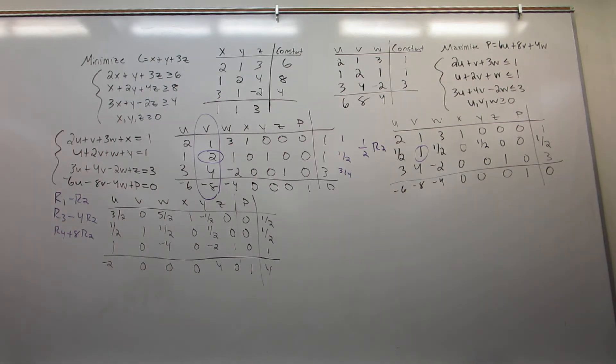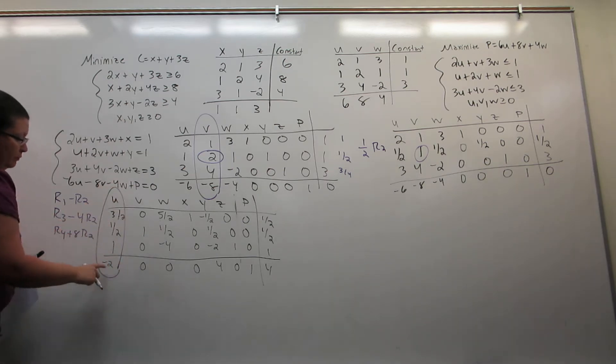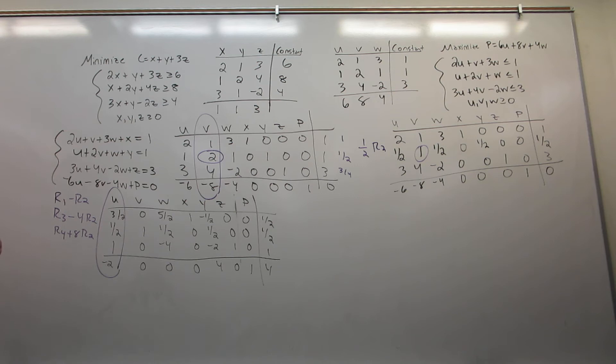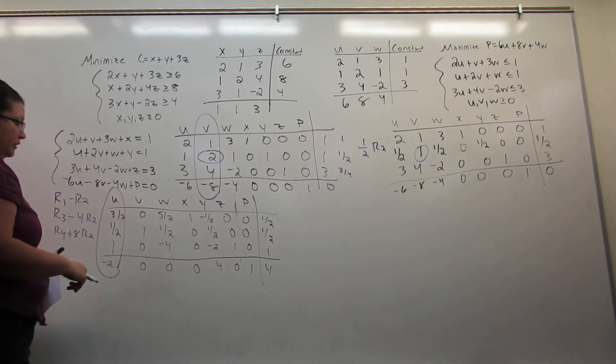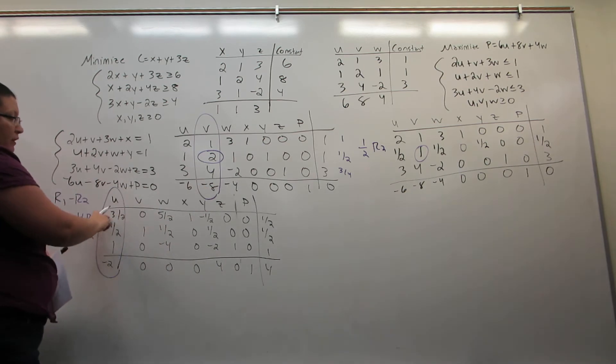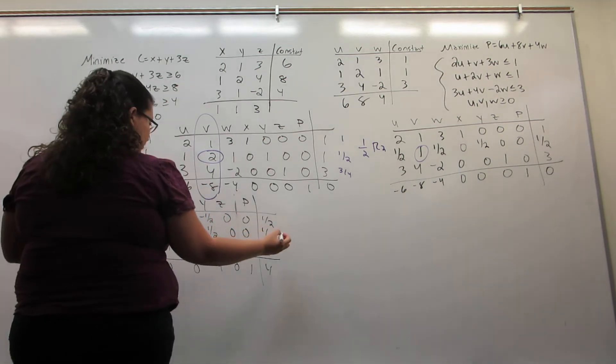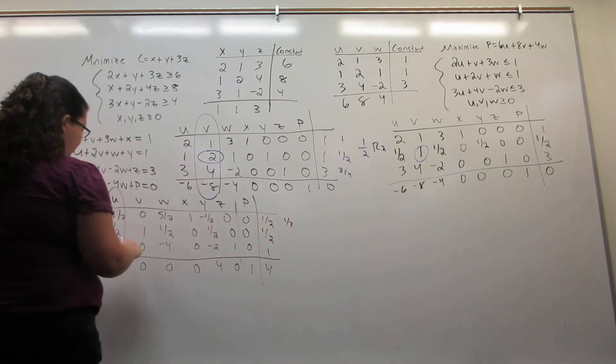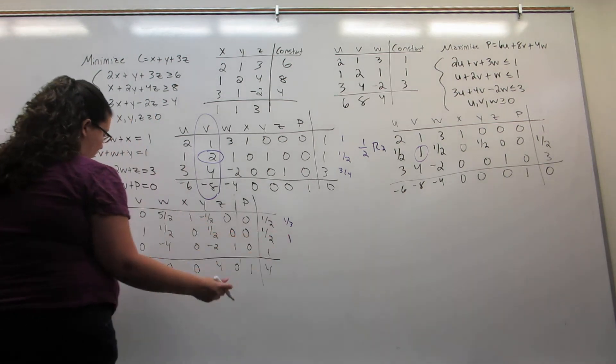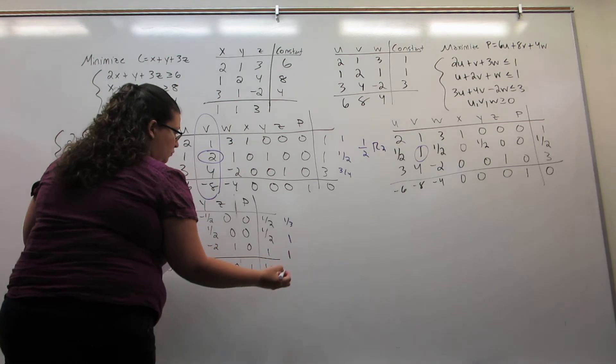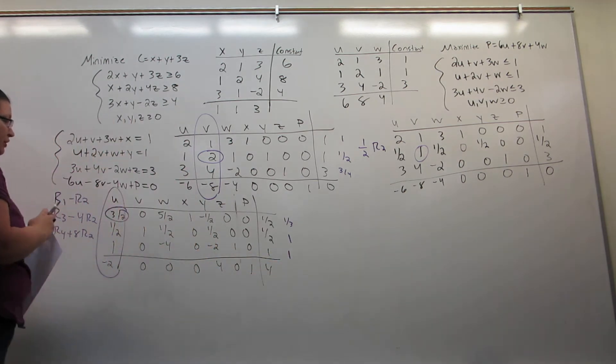Now we identify a new pivot position. We know it will be in the first column because we're picking the largest negative number in the bottom. If we divide these numbers into our constants, we have one-half times two-thirds, we get one-third. We have one-half times two, we get one. One divided by one is one, so our pivot position is the three-halves.